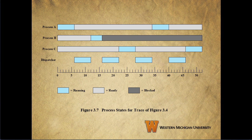This slide gives us another view of what's happening with our three processes and the dispatcher. It shows process B entering the blocked state when it makes that I/O call. After that, the dispatcher alternates between processes A and C until process B returns to the ready state.